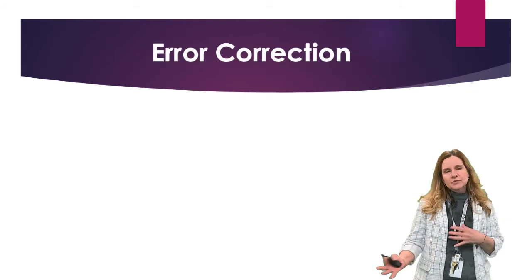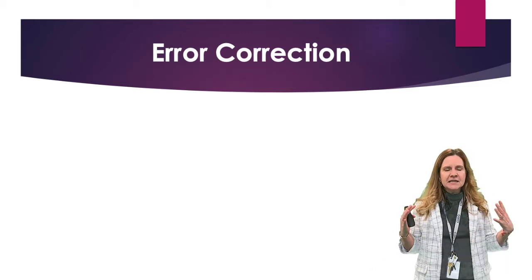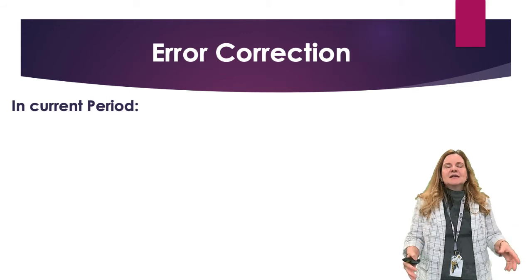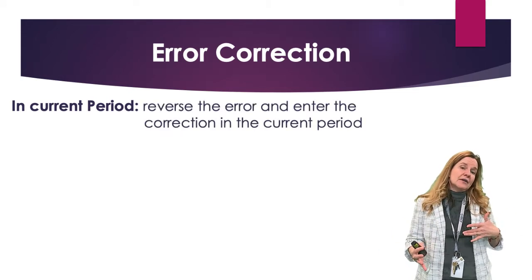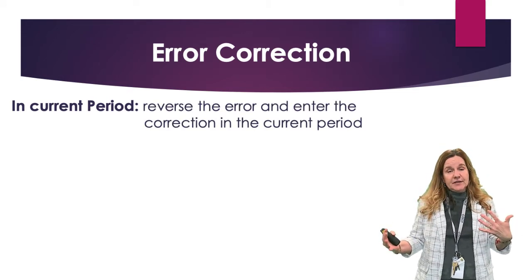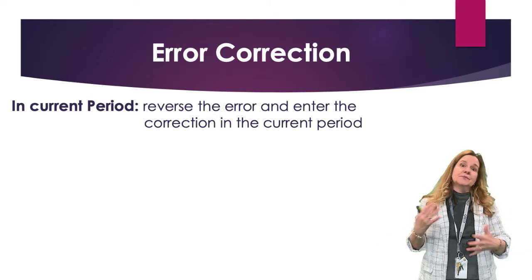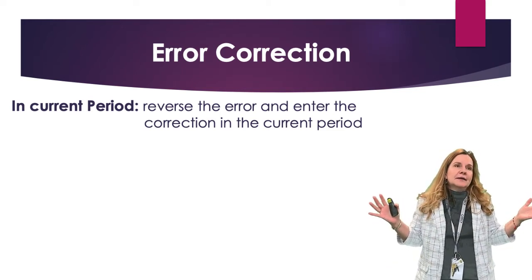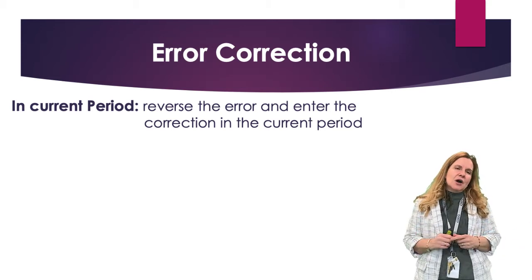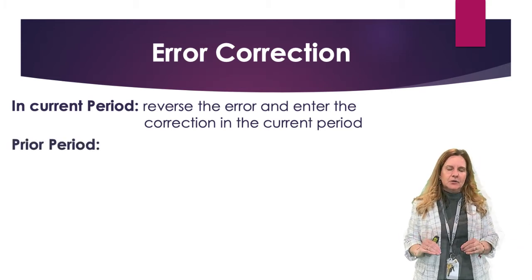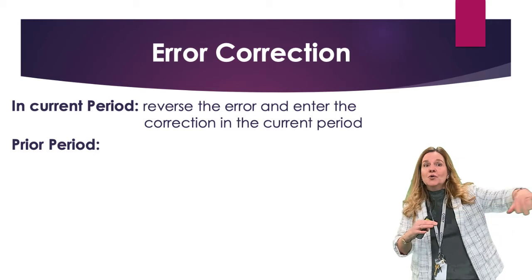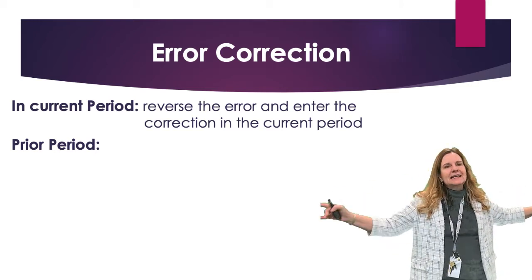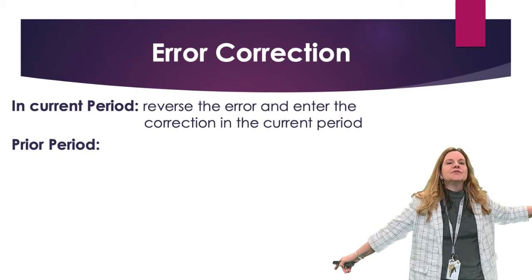Error correction is the last one. We make errors from time to time. If they are in the current period, we just reverse the error and put in the correct journal entry. From time to time, though, we have a prior period error — the current period has passed, we're in a whole new year, and we realize we made a mistake last year. How do we fix that?